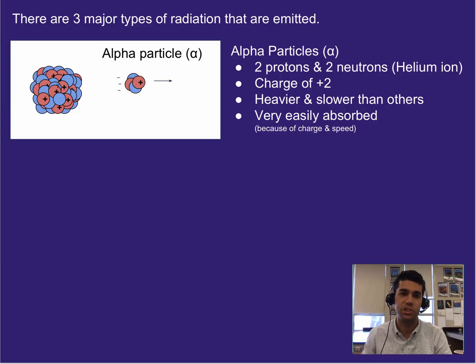An alpha particle is basically a chunk of that nucleus. It's two protons, here the red ones, and two neutrons, the blue circles right there. That makes it effectively a helium ion, meaning if you took away the electrons from a helium atom, that's effectively what's being shot out of a nucleus as a type of radiation.